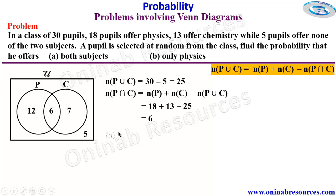Then we go to A. For A, a pupil is selected at random from the class. Find the probability that he offers both subjects. So that's going to be the probability of P intersection C.